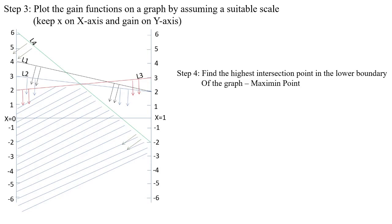In the lower boundary of the graph, identify the highest intersection point. There are three intersection points in the lower boundary. Among these three, find the highest intersection point. This highest point is called the maximin point. This point is the highest intersection point in the lower boundary of the graph.